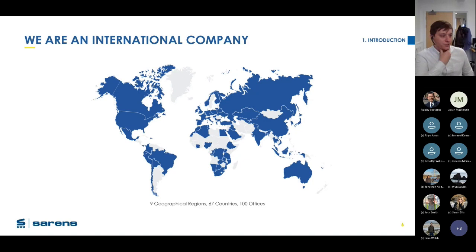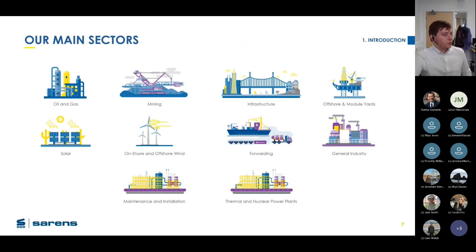Sarens is an international company. We operate all over the world — nine geographical locations, 67 countries, over 100 offices. Our main sectors are oil and gas, mining, infrastructure — basically anything heavy that needs to be lifted or moved. Primarily at the moment it's offshore wind and infrastructure that we're doing a lot of work for.